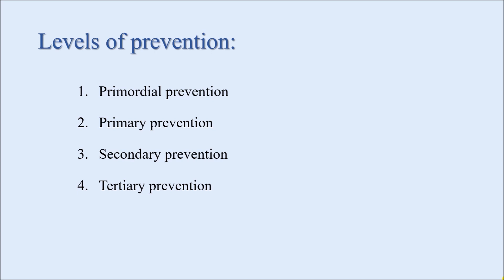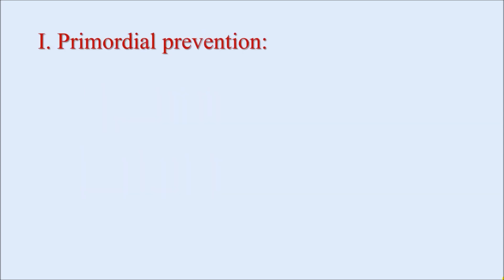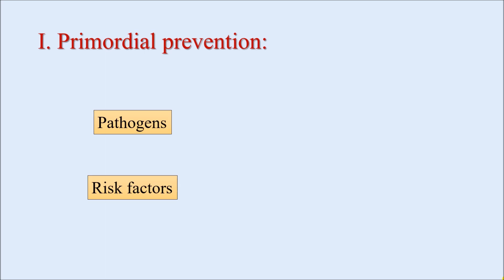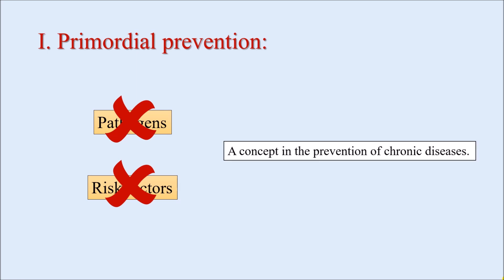The first level is primordial prevention. The first important thing in the causation of disease is the presence of a pathogen or risk factor. Pathogens are responsible for communicable diseases while risk factors are responsible for non-communicable diseases. If we could take any measure so that the pathogens or risk factors do not develop at all, that would be considered as primordial prevention.